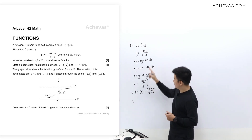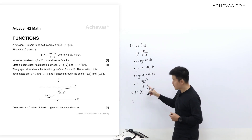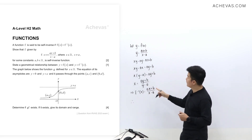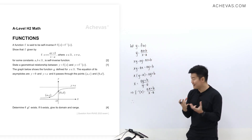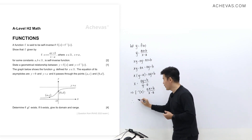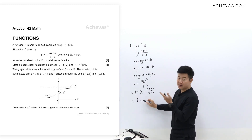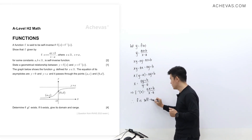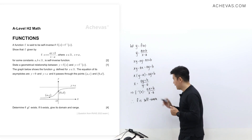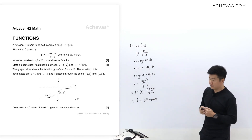Since the expression for f⁻¹ and the expression for f are exactly the same, therefore, according to the definition of self-inverse given to us by the question, f is a self-inverse function.